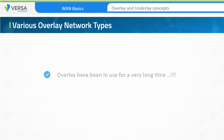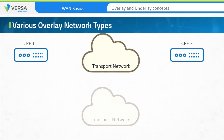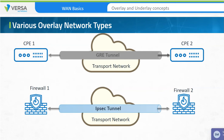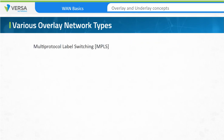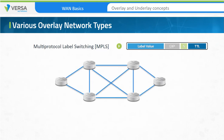Overlay networks have been used for a very long time — you may have implemented one without even realizing it. GRE tunnels and IPsec-based tunnels are examples of overlay network connections; they are virtual network links that extend across a physical transport network. MPLS and MPLS-enabled applications use labels to create virtual network links. These virtual network links or tunnels are used to forward traffic between service provider edge devices in order to offer different levels of service.